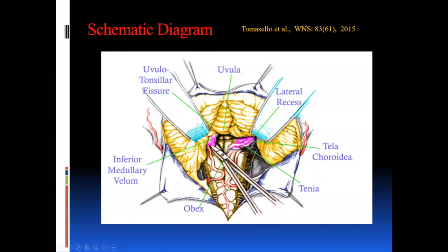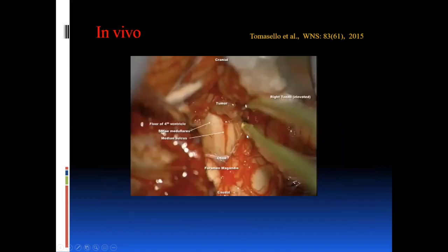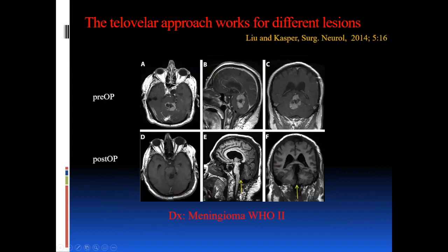There's a beautiful paper by Tomasello in World Neurosurgery 2015 that I really recommend to all learners. It comes with a beautiful diagram and a small video clip walking through the case. In his exposure you identify the obex, see the flow of the fourth ventricle with the stria medullaris, see the tumor hanging down, identify the tela laterally, cut at 45 degrees, and he shows you how to suck out the tumor.